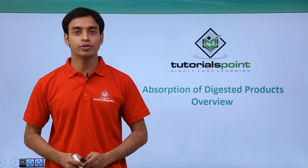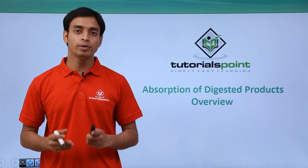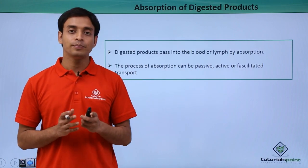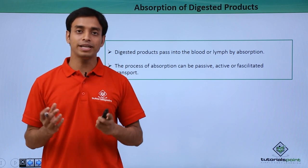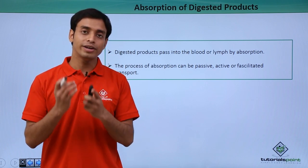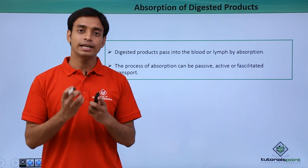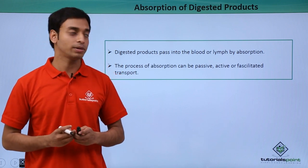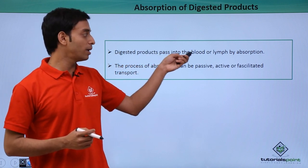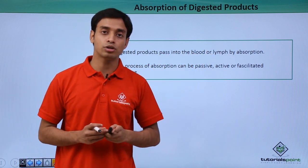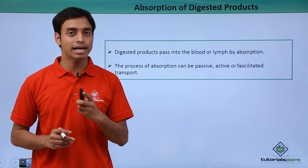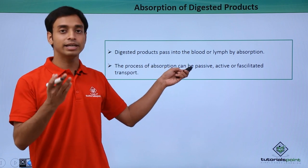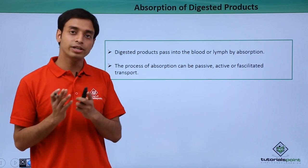Welcome to Tutorials Point. In this video we will be talking about the absorption of the digested products. So far we have talked about how complex food materials are broken down into smaller substances so they can be easily absorbed. The digested products pass into the blood or the lymph by the process of absorption, and this happens mostly in the small intestine. This process of absorption can happen in various ways.